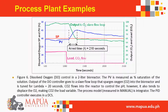Dissolved oxygen control in a two-liter bioreactor: the PV is measured as percent saturation of the solution. Output of the DO controller goes to a slave flow loop that sparges oxygen into the bioreactor, tuned for lambda = 20 seconds. CO2 flows into the reactor to control pH but also displaces O2, making CO2 the load variable. The process model is integrator; the PID executes in a DCS.